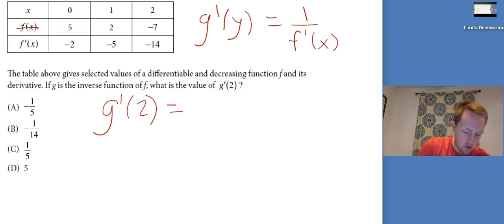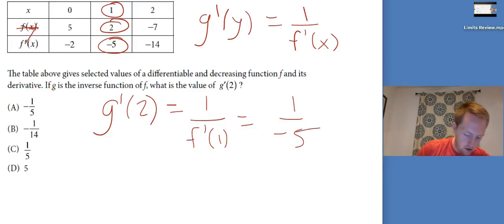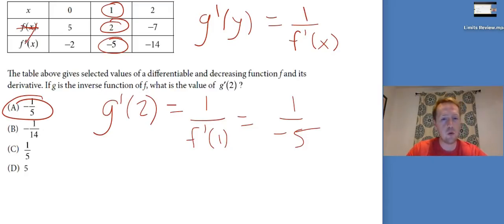So the y value is 2. What x value gives me a y value of 2? Well, here's the y values. Y value of 2 is x value of 1. So we want 1 over f prime of 1, which f prime of 1 is negative 5. So that's 1 over negative 5. That looks like a. That's our answer.